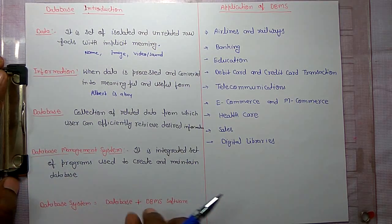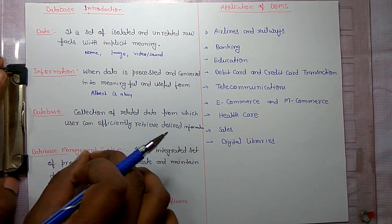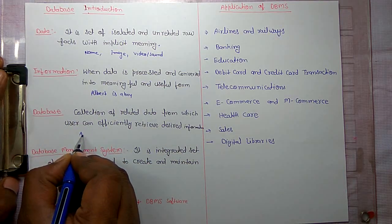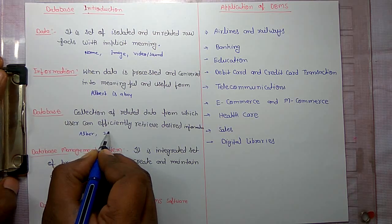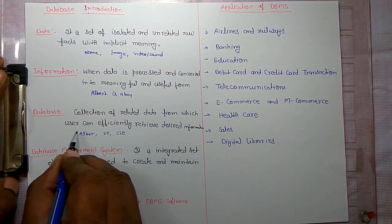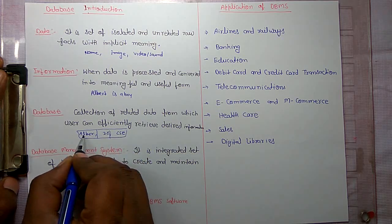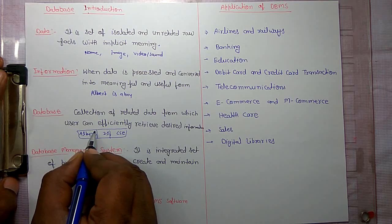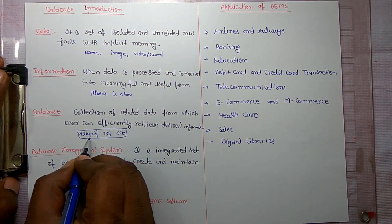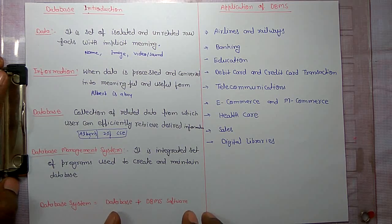Database is a collection of related data from which a user can efficiently retrieve desired information. For example, in a database you store that Albert is a 25-year-old student of CSC branch. This is a collection of related data, known as a database, from which users can efficiently retrieve desired information.